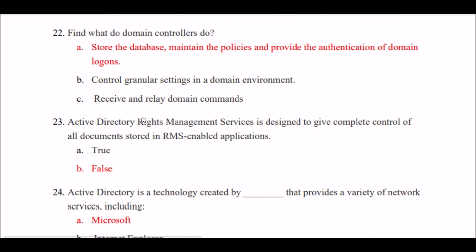Next question: What do domain controllers do? Option A: store the database, maintain the policies, and provide the authentication of domain logins. Option B: control granular settings in a domain environment. Option C: receive and relay domain commands. The right answer is Option A — domain controllers store the database, maintain the policies, and provide the authentication of domain logins.